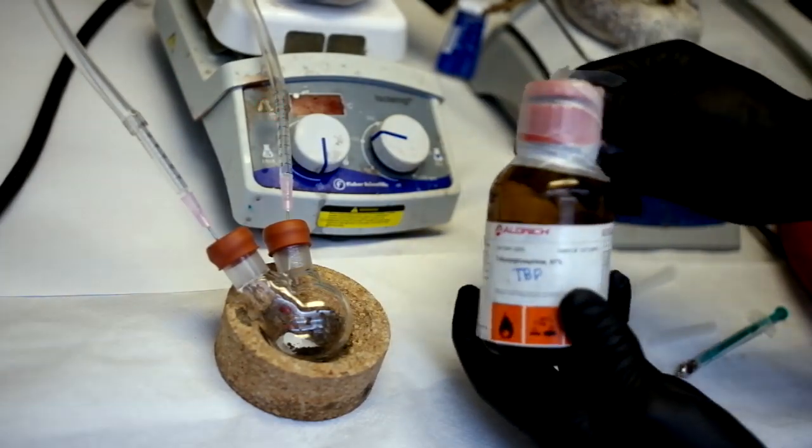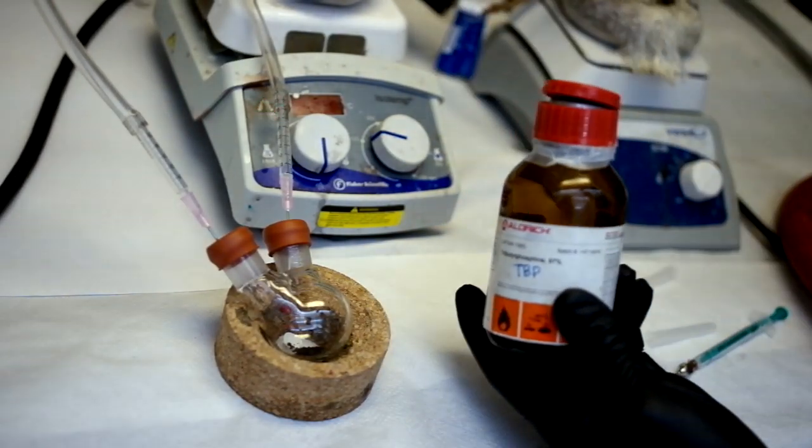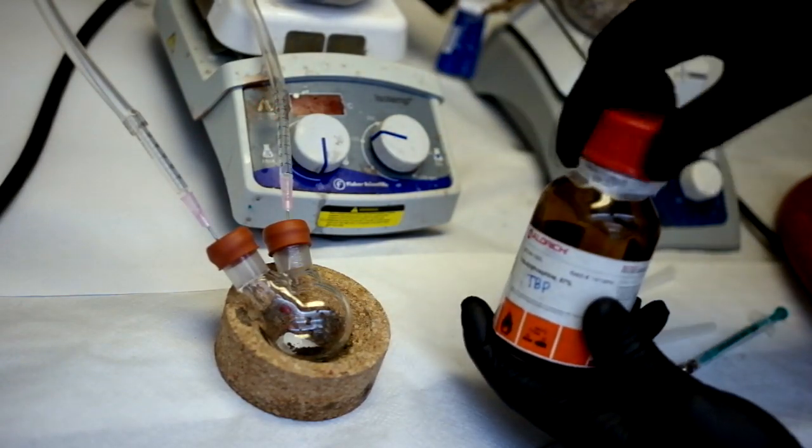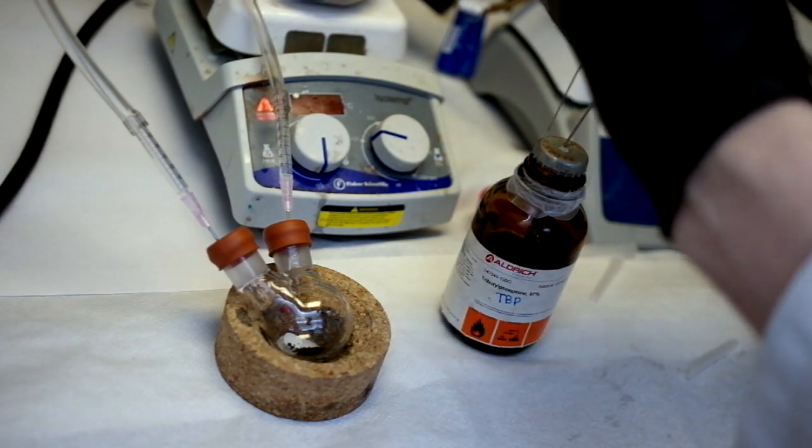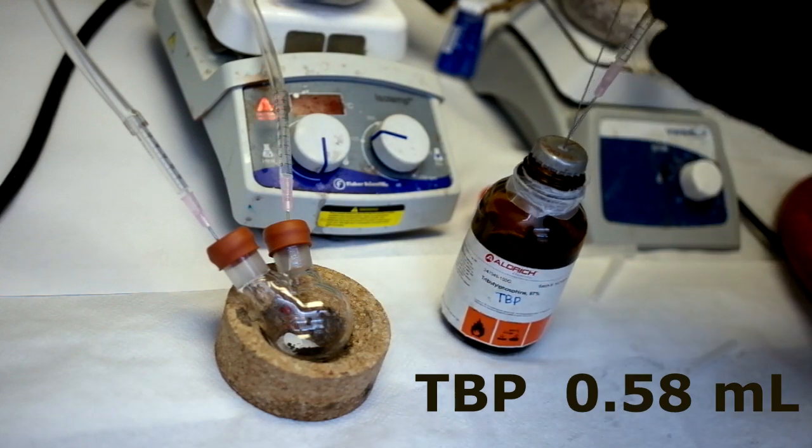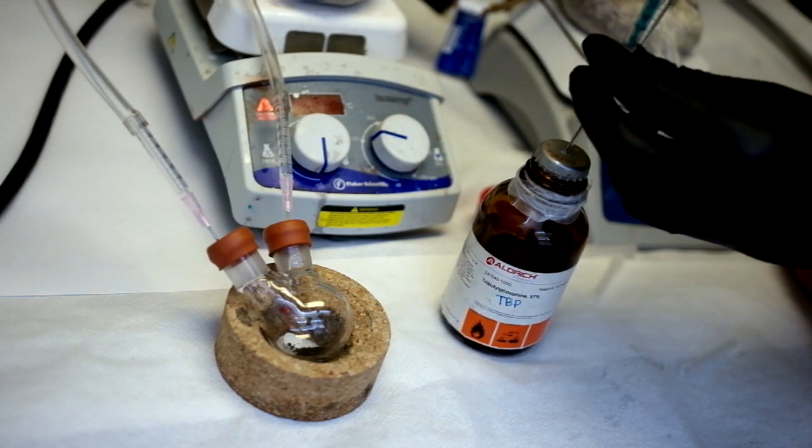Begin an argon flow in the selenium precursor flask. Underneath the fume hood, open up your TBP and insert an argon needle. With argon flowing, draw out 0.58 milliliters of TBP.